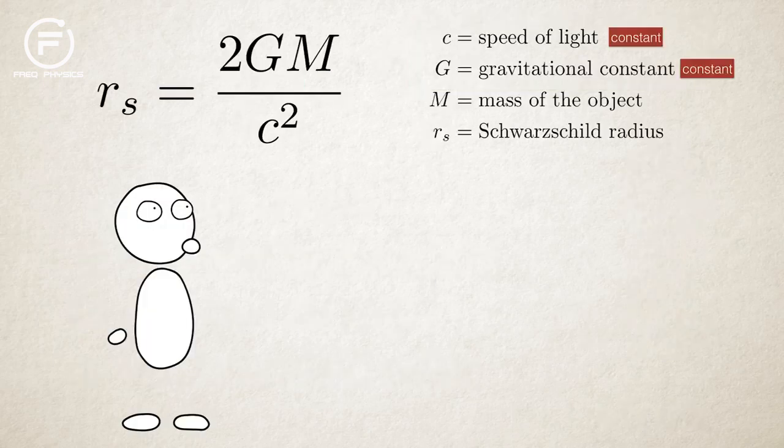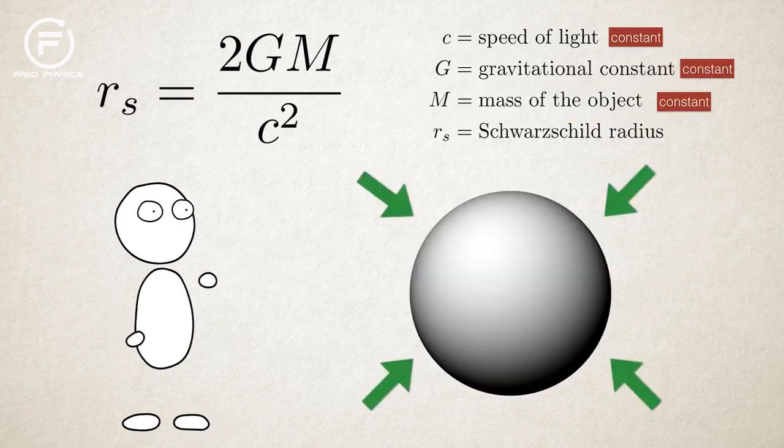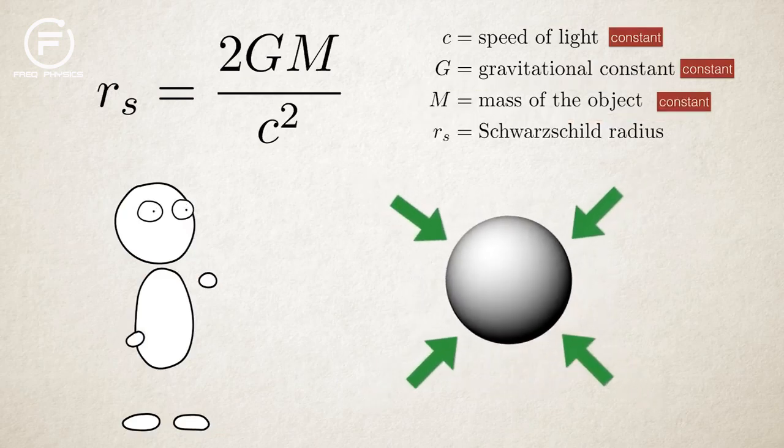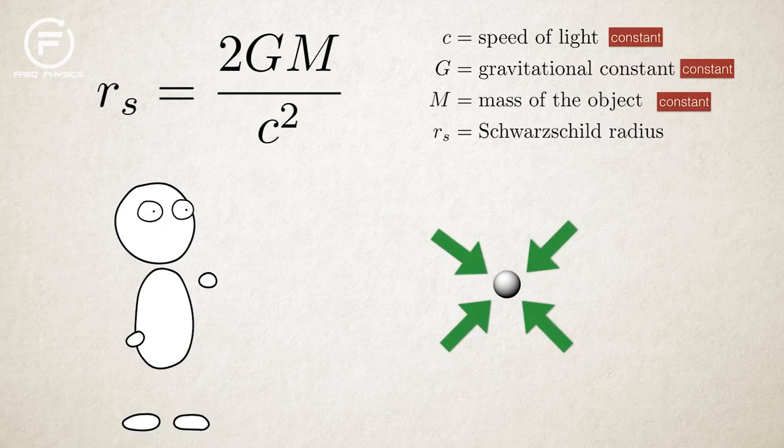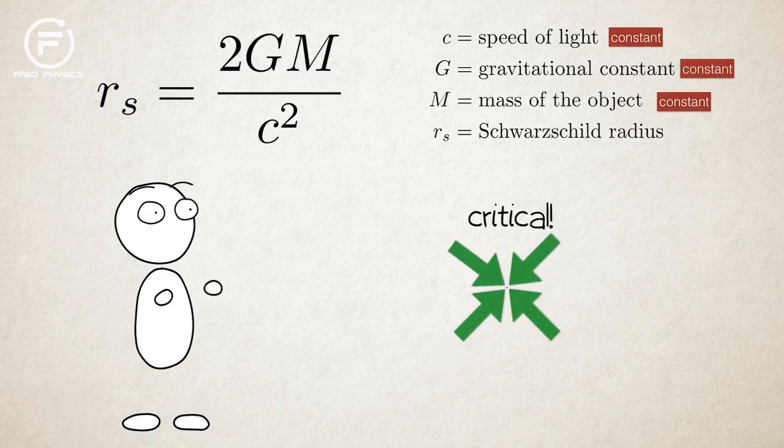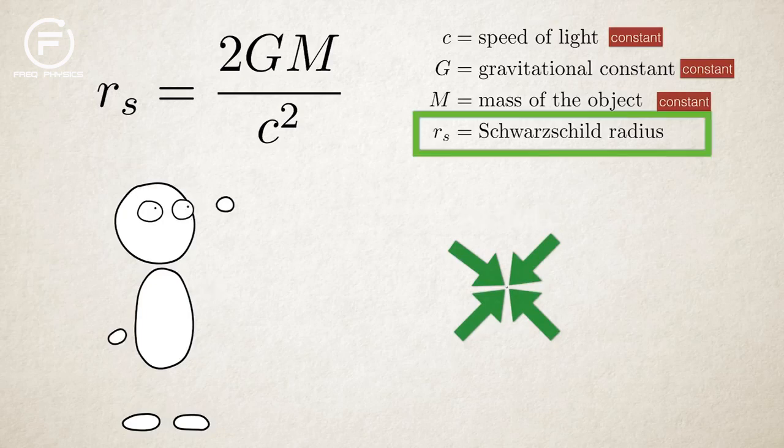C and G are constants. Say you have a ball of mass M. If you squeeze it, the mass stays the same, but its volume gets smaller. If you keep squeezing the ball, it will become tiny, but stay just as massive as before, all the molecules compressed close to each other, until it reaches a critical size, and that's the Schwarzschild radius.